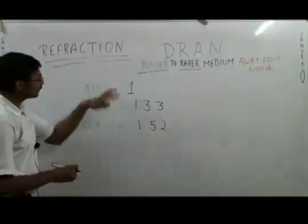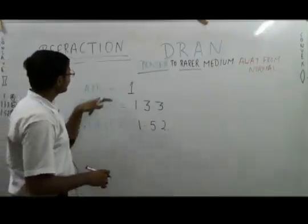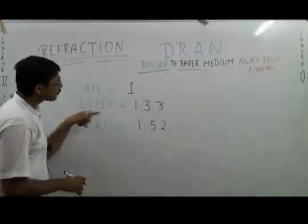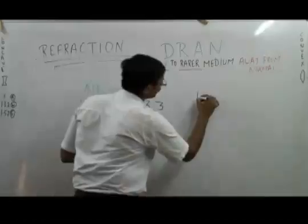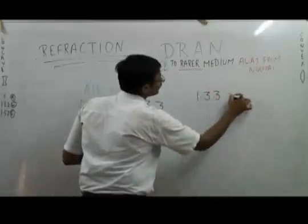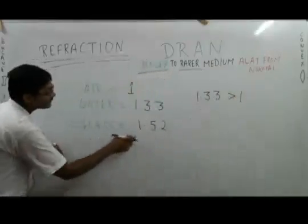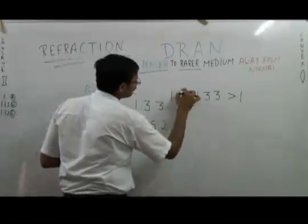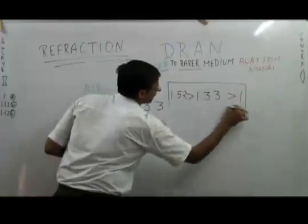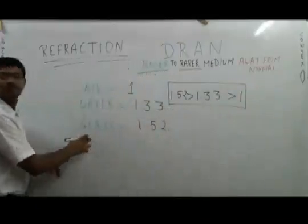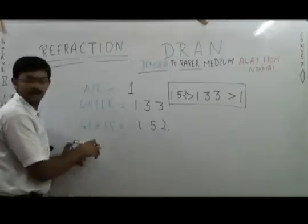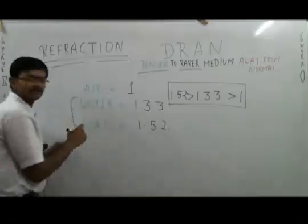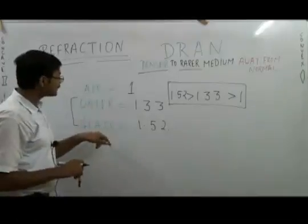Now among these three mediums, we can see that air is the rarer medium compared to water because the refractive index of water is greater than air (1.33 is greater than 1). But glass is denser than water because its refractive index is greater than water. So among these three mediums, the densest medium is glass and the rarest medium is air.